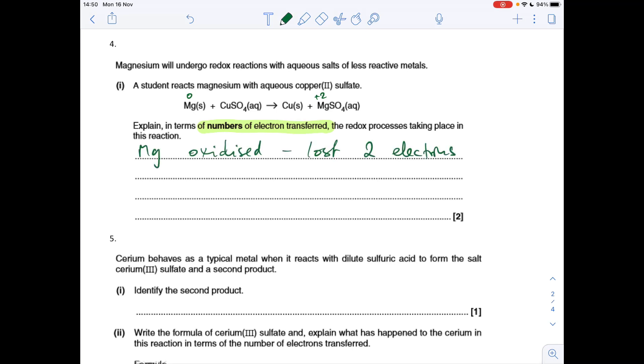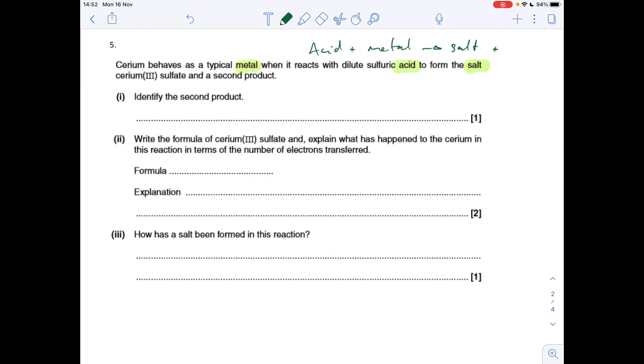So moving on to the reduction process, if we look at the copper. Copper starts out as +2 in that compound because that sulphate ion has a -2 charge. So the copper must be +2. And it's going to the element where it has the oxidation number of zero. So that's a reduction process because its oxidation number has decreased. In terms of electrons, it's gained two electrons.